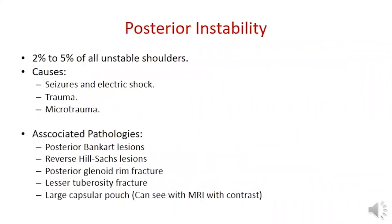Posterior shoulder instability is less common than anterior instability but more commonly misdiagnosed. Causes include epileptic fits, electric shock, posterior-directed trauma, or repetitive microtrauma in overhead athletes. Associated pathology may include posterior Bankart lesion, reverse Hill-Sachs lesion, posterior glenoid rim fracture, or fracture of the lesser tuberosity.